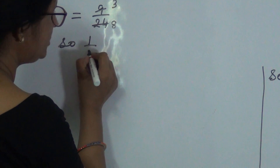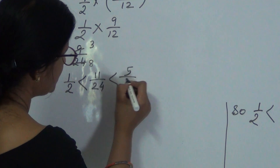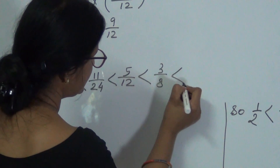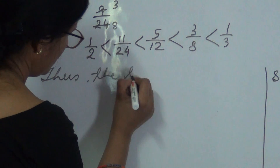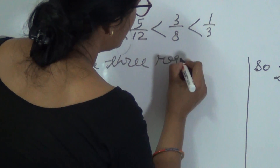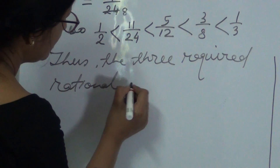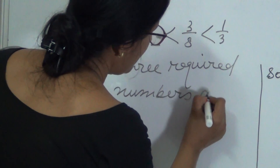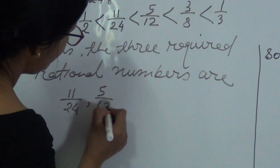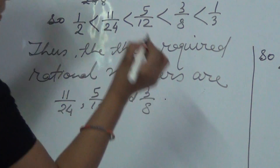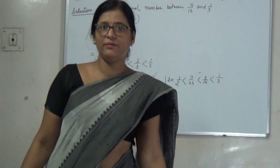So what we have got is: 1/2 is less than 11/24, which is less than 5/12, which is less than 3/8, which is less than 1/3. Thus, the three required rational numbers are 11/24, 5/12, and 3/8. Using this method, you can find any number of rational numbers between two given rational numbers.